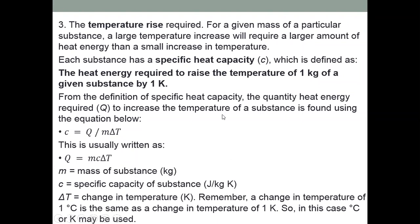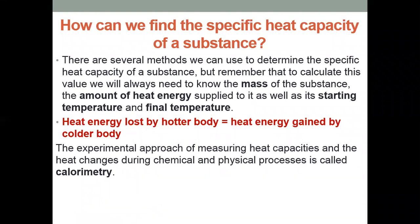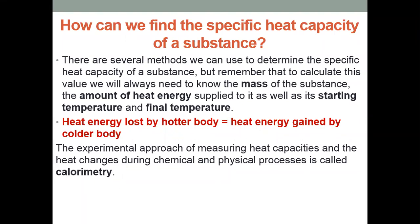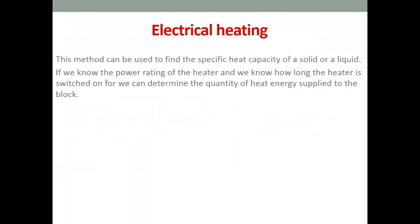How can we find the specific heat capacity of a substance? One way is using the formula just given. A second way is: heat energy lost by the hotter body equals heat energy gained by the colder body. This equation gives us the change in specific heat capacity.